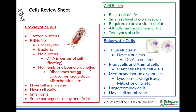They also have no membrane-bound organelles — that's the second 'no.' This means they do have ribosomes, but they are not bound by a membrane. They do not have lysosomes, Golgi bodies, mitochondria, or chloroplasts. They have very limited internal structures. They do have ribosomes to make proteins, and they have cytoplasm and DNA, but they don't have all the extra stuff you'd find in a eukaryotic cell. So: prokaryotic, bacteria, no nucleus, no membrane-bound organelles.